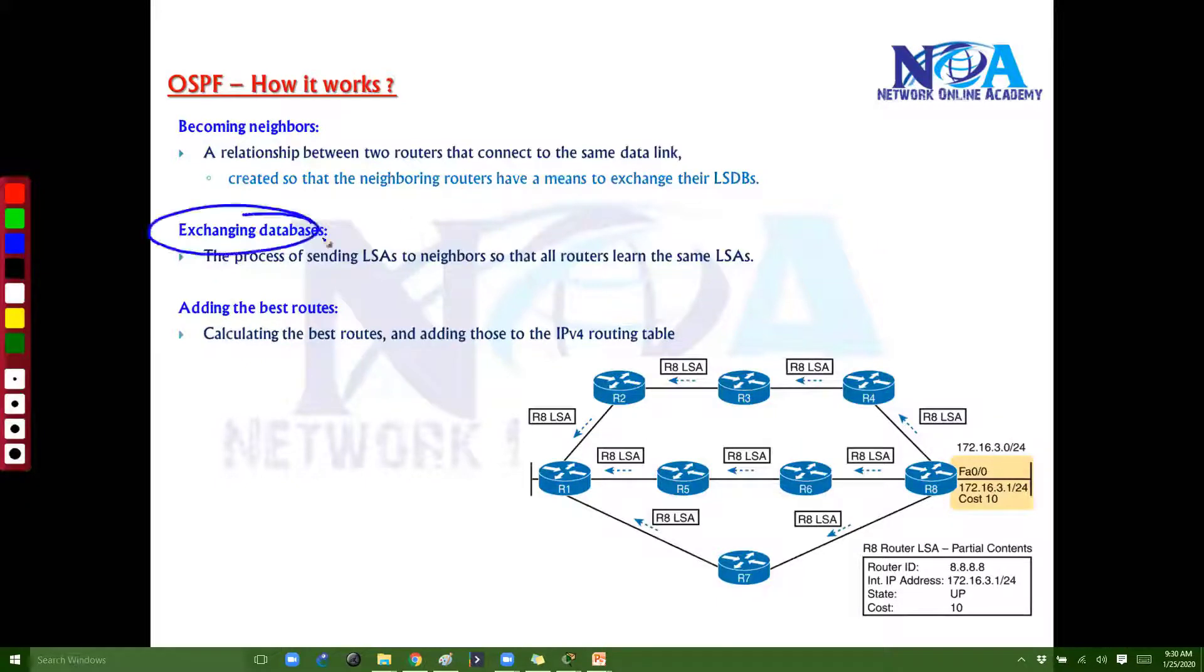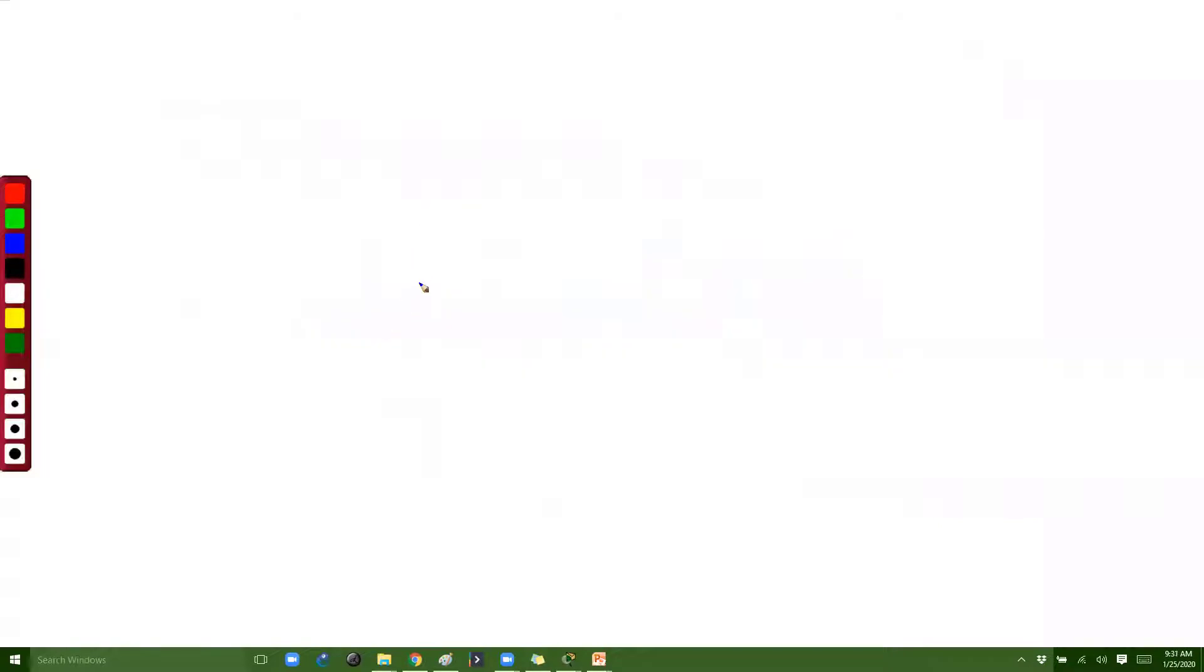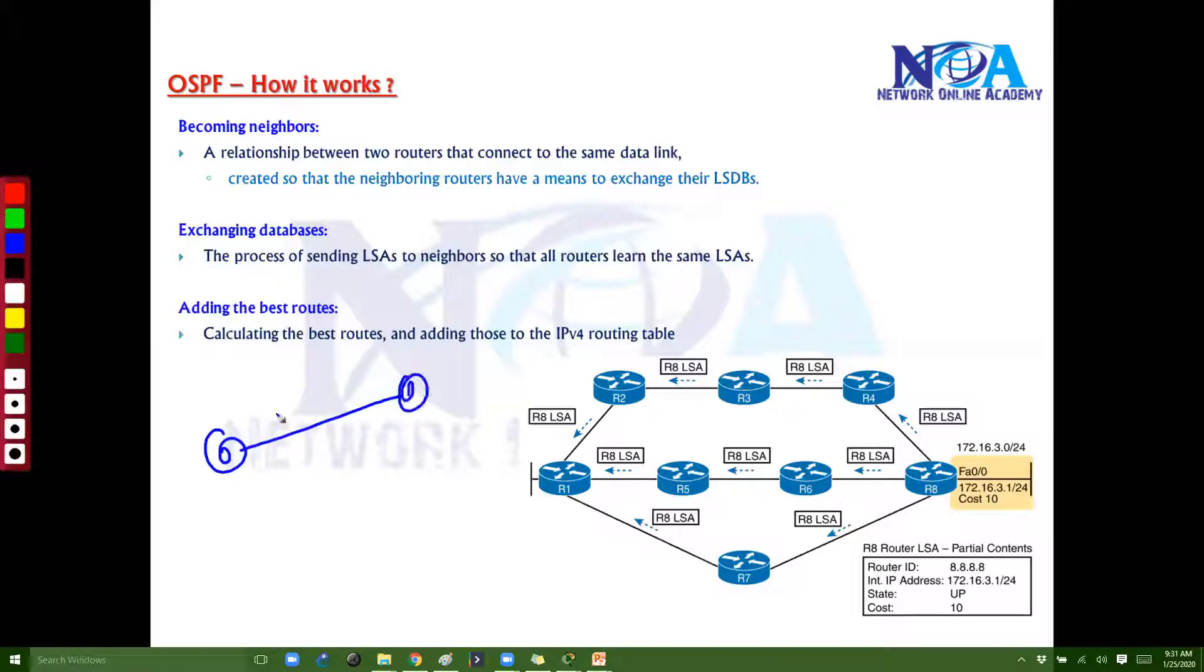Technically we call them as link state database. That's what we call it as. Exchanging the link state database is nothing but now these two neighbors, once they become neighbors, they will exchange their own information, like whatever information they have, probably the routes. They will exchange with all.